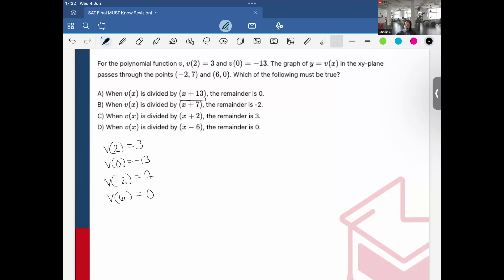So what I would do is plug in negative 13. And then whatever that is, that will give me the output, which is the remainder. But in this case, I don't know what the value of v(negative 13) is.